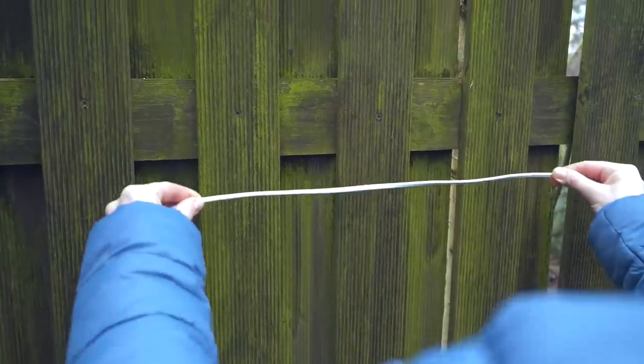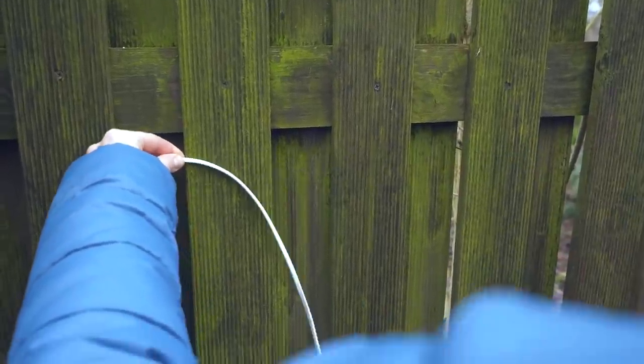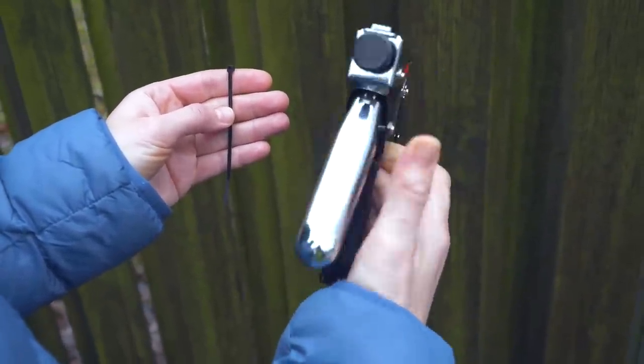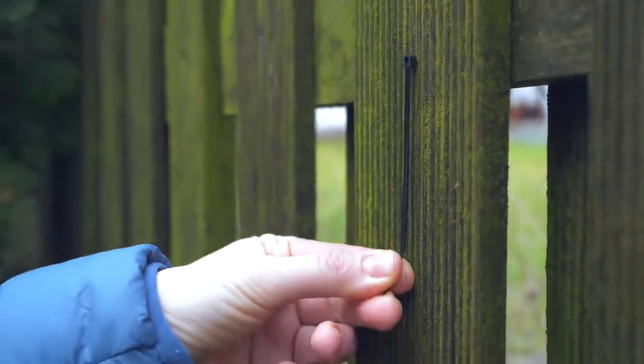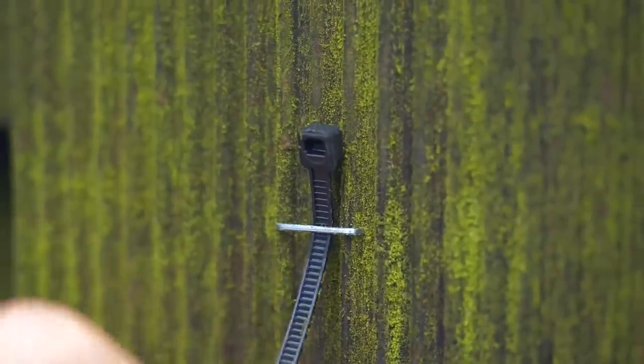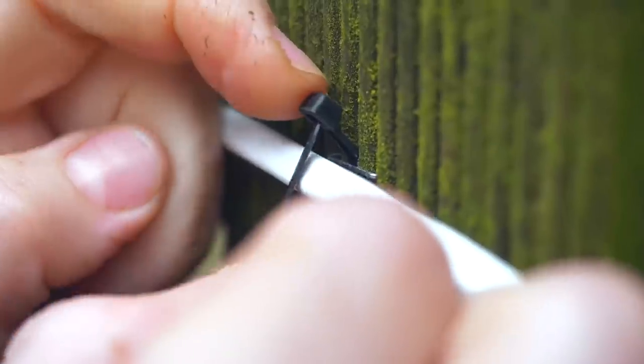Sometimes you need to attach an electrical cable to a wooden surface, and how lucky you are if you have plastic zip ties and a staple gun like this. With it, you can very easily attach the ties to the fence and the electric wire to them without any problems.